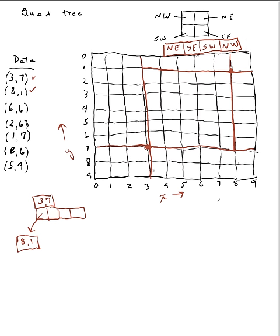Now let me insert (6,6). My (6,6) goes right here — first I look at my root node, and compared to the root (3,7), I'm in the northeast quadrant, so I go down to the (8,1) node. Compared to (8,1), the point (6,6) is in the southwest quadrant. So the children of (8,1) — the southwest child, which is the third one — is where my (6,6) goes. I'll number the nodes as I insert them: node 1 is (3,7), node 2 is (8,1), and node 3 is (6,6).